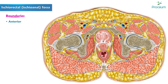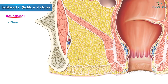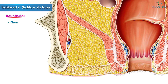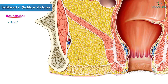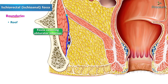Anteriorly, it is bounded by the posterior border of the perineal membrane. The floor is formed by the perineal skin, and the roof by the meeting point of the fascia covering obturator internus and the inferior fascia of the pelvic diaphragm.